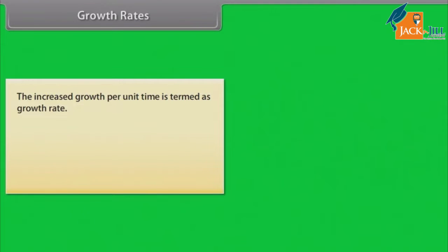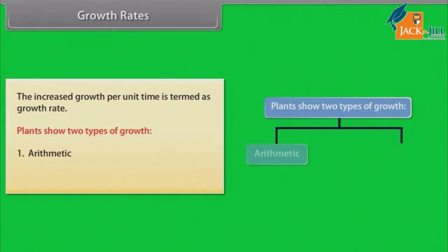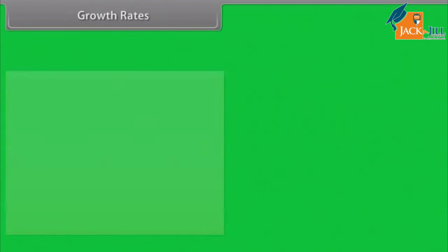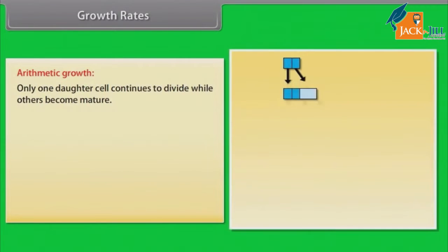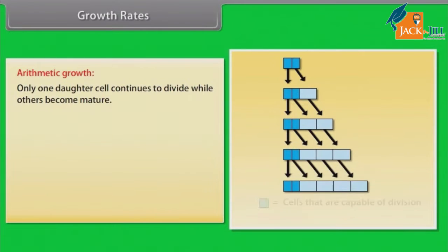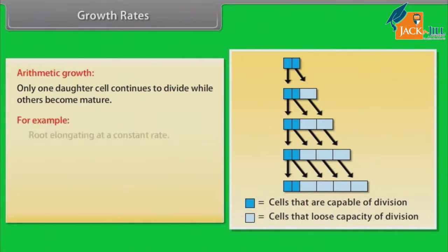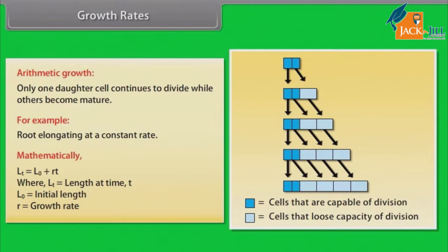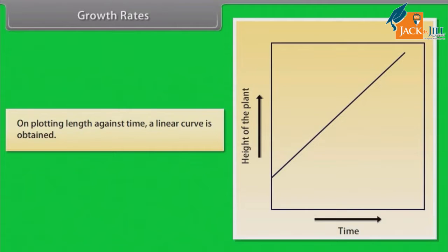Growth Rates: The increased growth per unit time is termed as growth rate. Plants show two types of growth: arithmetic and geometric. Arithmetic growth: Only one daughter cell continues to divide while others become mature. For example, root elongating at a constant rate. Mathematically, Lt = L0 + RT, where Lt is the length at time t, L0 is the initial length, and R is the growth rate. On plotting length against time, a linear curve is obtained.